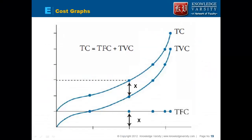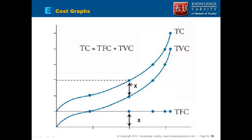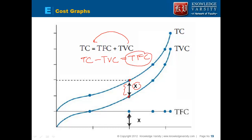So first, total cost keeps on increasing. Total variable cost also keeps on increasing, while total fixed cost remains constant. Note that the distance between the total cost curve and the total variable cost curve is exactly equal to the total fixed cost, because total cost minus total variable cost equals total fixed cost — so this distance is always the same.